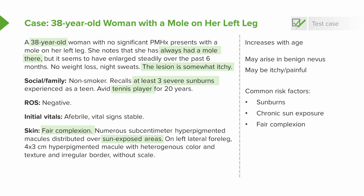Our most common risk factors involve sun exposure. Folks who've had a history of severe sunburns as a child — with blistering and significant pain — are at risk, as is chronic sun exposure. Our patient is an avid tennis player, so she's getting a lot of sun exposure, especially if she's not using sunscreen regularly. Patients who are fair-complexioned are more susceptible. Skin cancers in general are relatively rare among dark-skinned patients, as hyperpigmentation is protective.